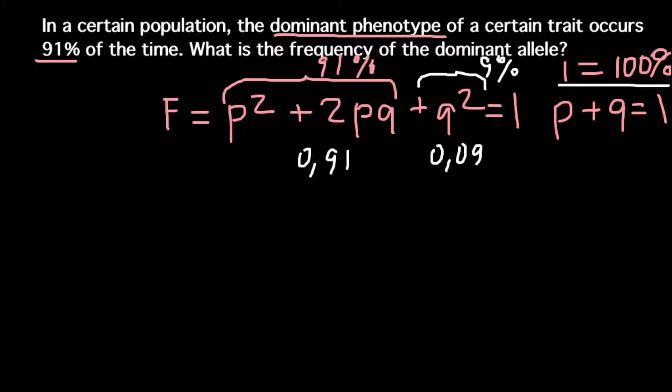Because we know that q squared equals 0.09, we can say that q would equal 0.3. So this is the occurrence of the recessive allele q.